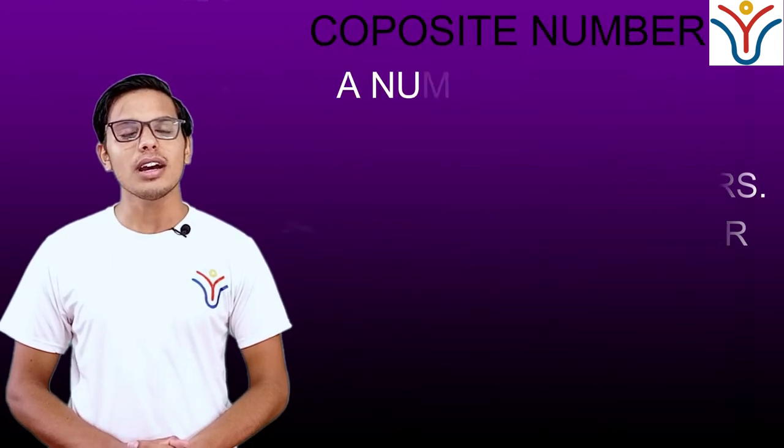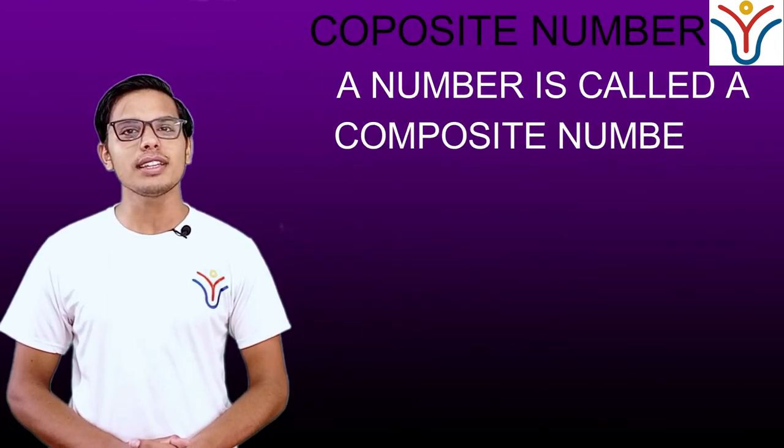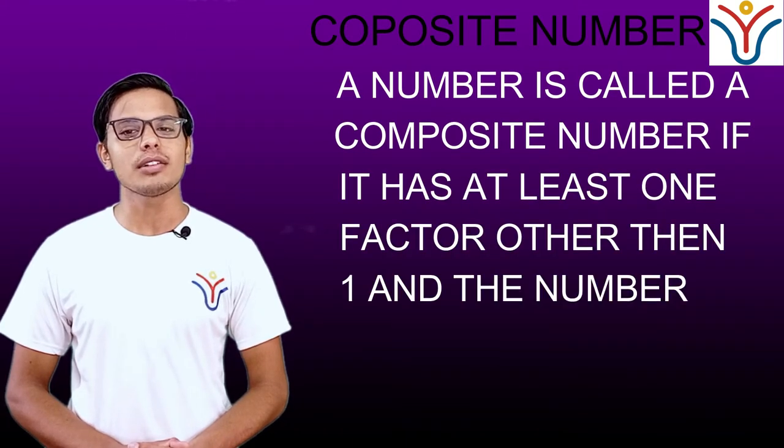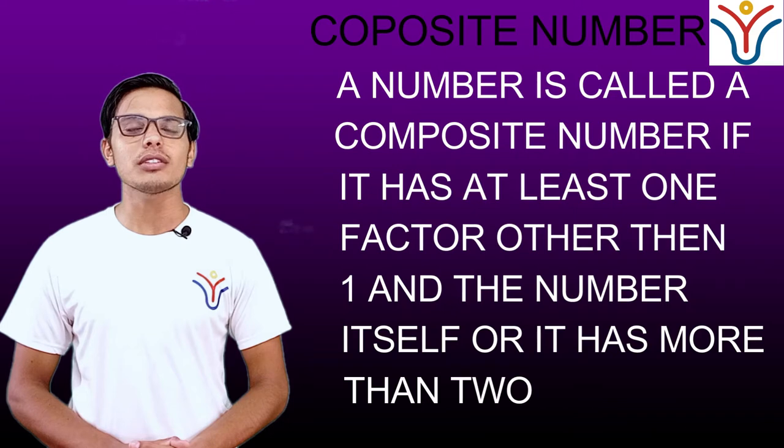Composite numbers: A number is called a composite number if it has at least one factor other than one and the number itself, or it has more than two factors.